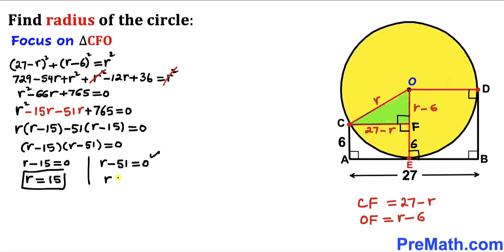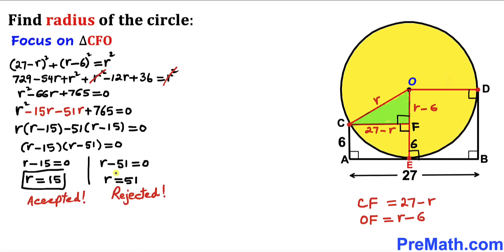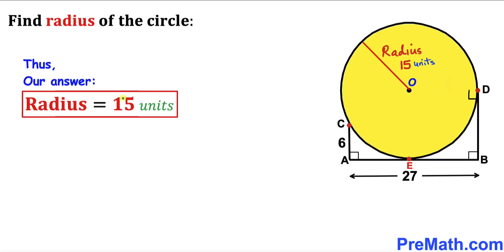This gives r = 15 or r = 51. If r = 51, then AE = 27 − 51 = −24, which is a negative length — impossible. So r = 51 is rejected. Therefore, the radius of this yellow circle is r = 15 units. Thanks for watching, and please subscribe for more exciting videos!